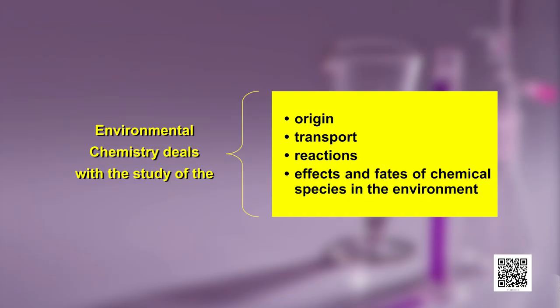As you are already aware, environmental studies deal with all the social, economical, biological, physical and chemical interrelations with our surroundings. As part of this, let us discuss environmental chemistry. Environmental chemistry deals with the study of the origin, transport, reactions, effects and fates of chemical species in the environment. The most important aspect of environmental chemistry prevailing nowadays is environmental pollution.